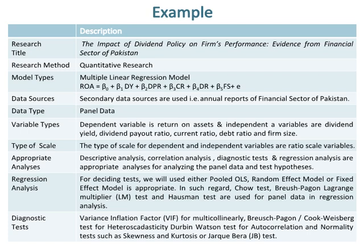There are six variables used in this study. The dependent variable is return on assets, and the independent variables are dividend yield, dividend payout ratio, current ratio, debt ratio, and firm size. The scale for both dependent and independent variables is ratio scale.